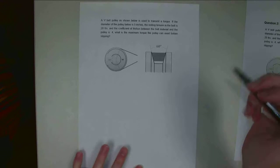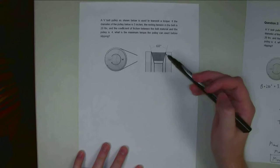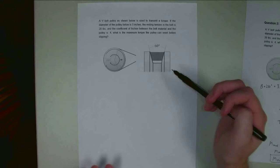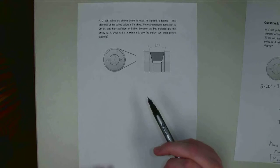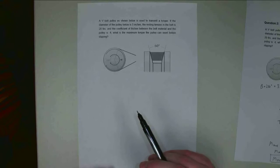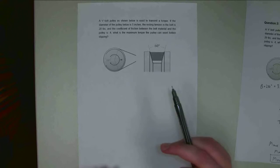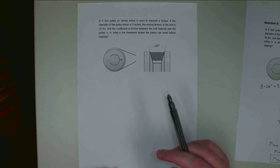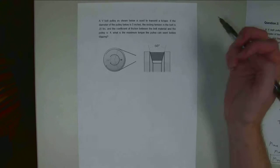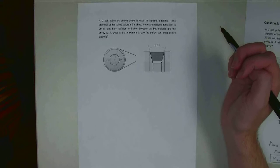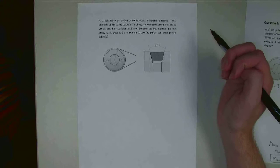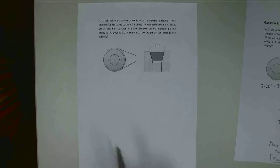Alright, for this problem we have a V-belt pulley as shown below. It's being used to transmit torque. So the diameter of the pulley is going to be 5 inches, and the resting tension in the belt we measure at 20 pounds. We know the coefficient of friction between the belt material and the pulley is 0.4. We want to find the maximum torque this pulley can exert before the belt starts to slip.